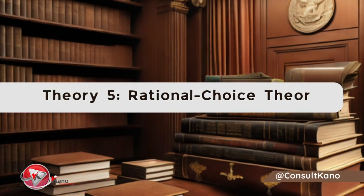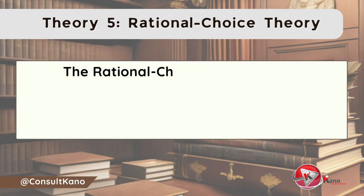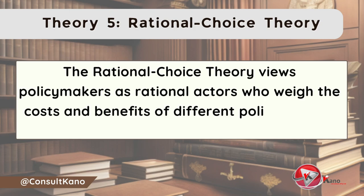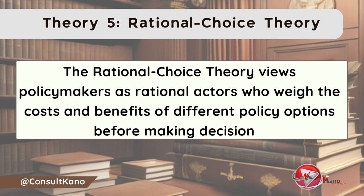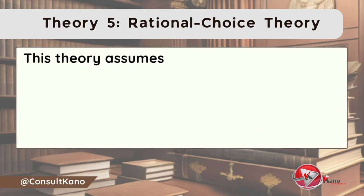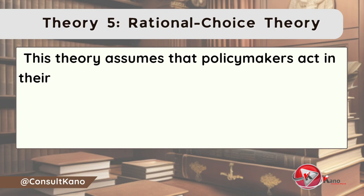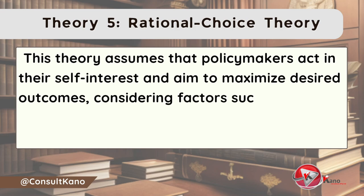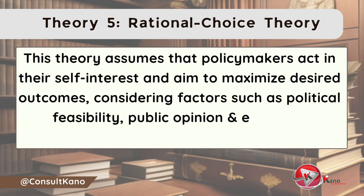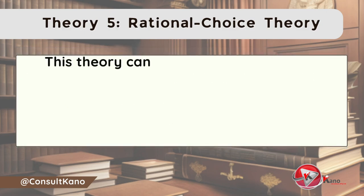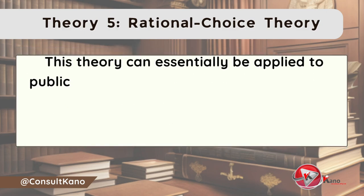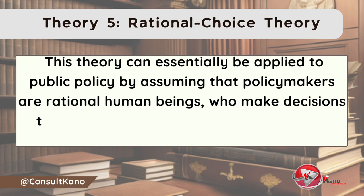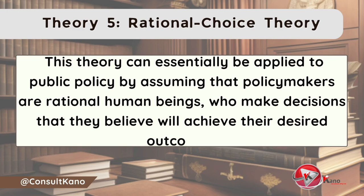Next, we'll be discussing the rational choice theory. The rational choice theory views policymakers as rational actors who weigh the costs and benefits of different policy options before making decisions. This theory assumes that policymakers act in their self-interest and aim to maximize desired outcomes, considering factors such as political feasibility, public opinion, and economic constraints. This theory can essentially be applied to public policy by assuming that policymakers are rational human beings who make decisions that they believe will achieve their desired outcomes.